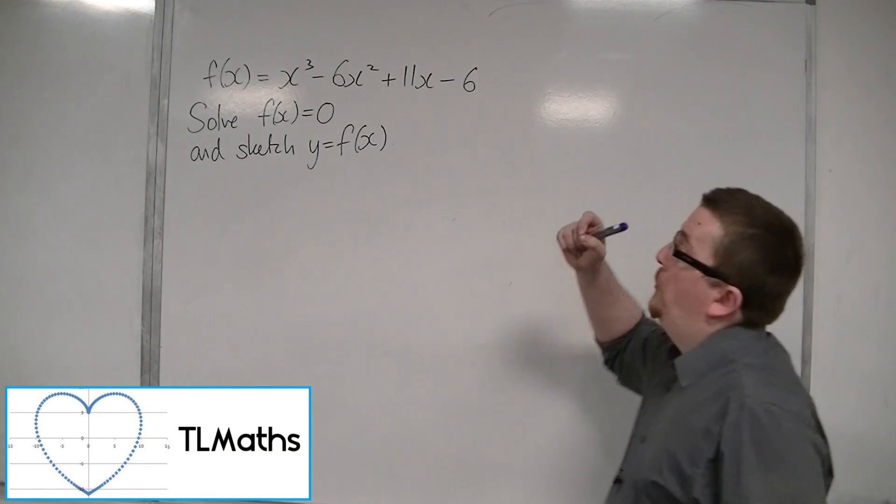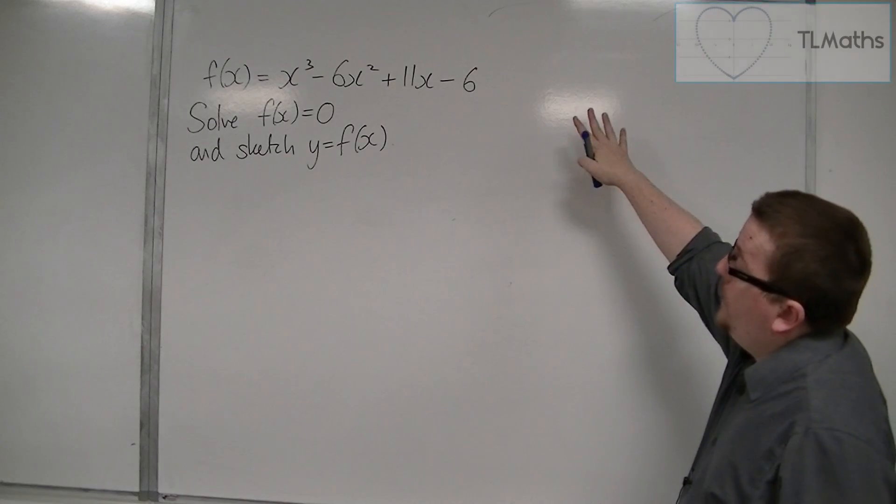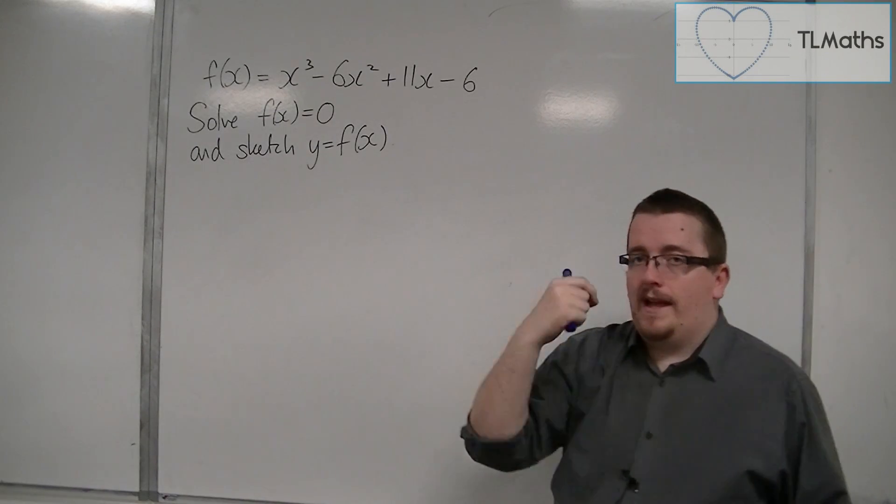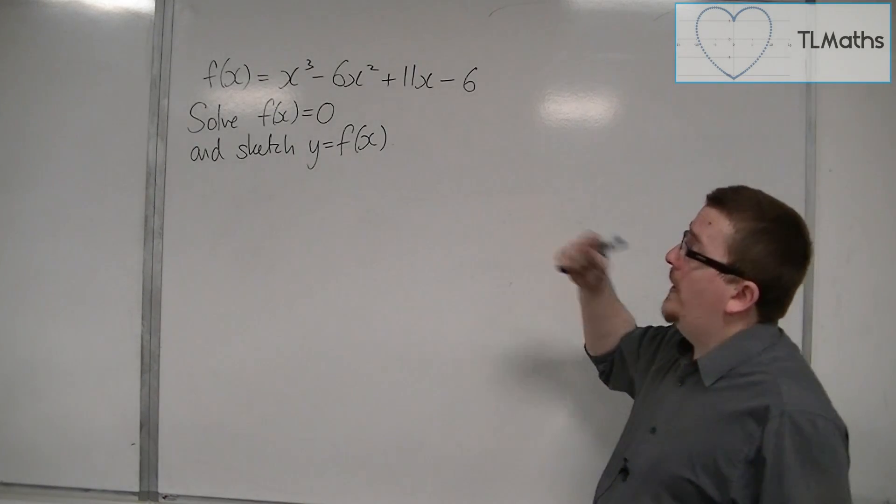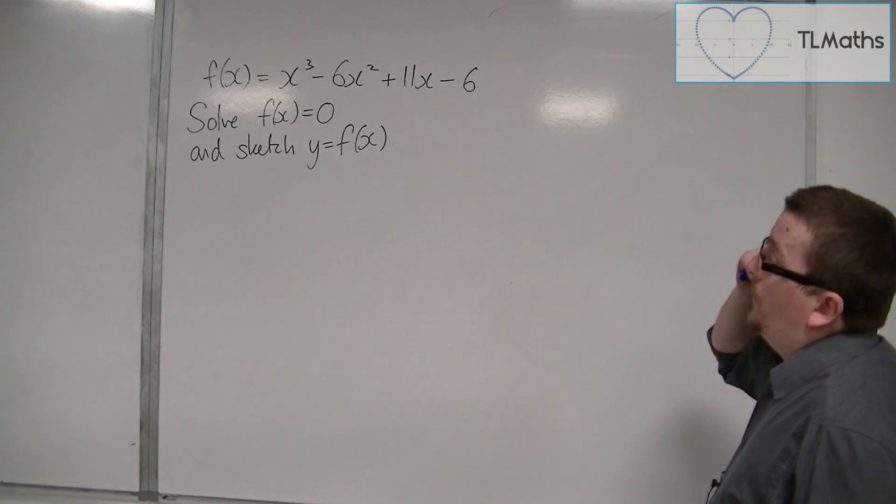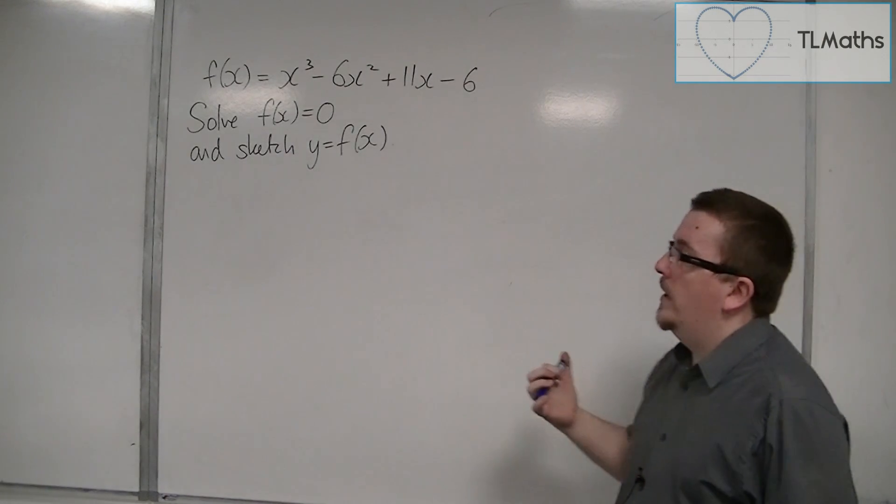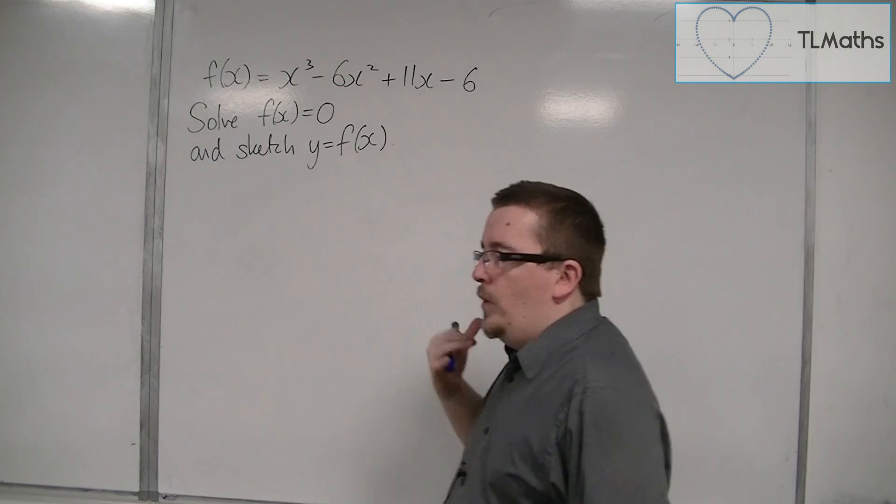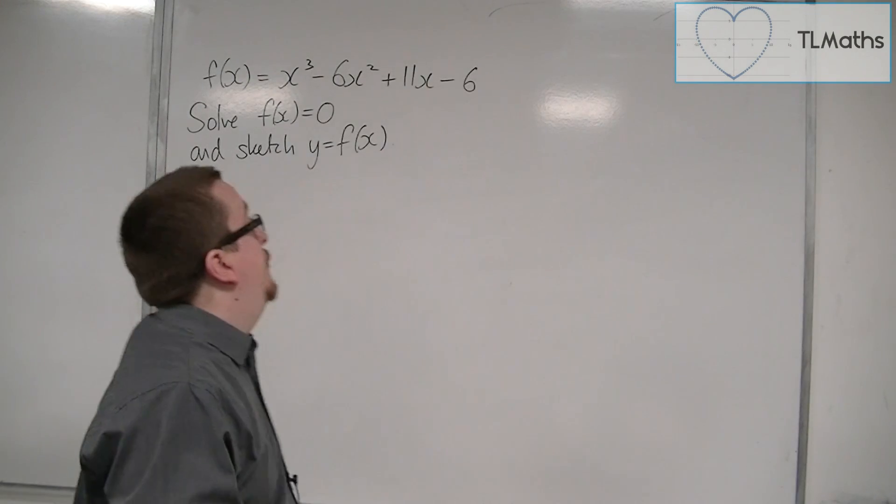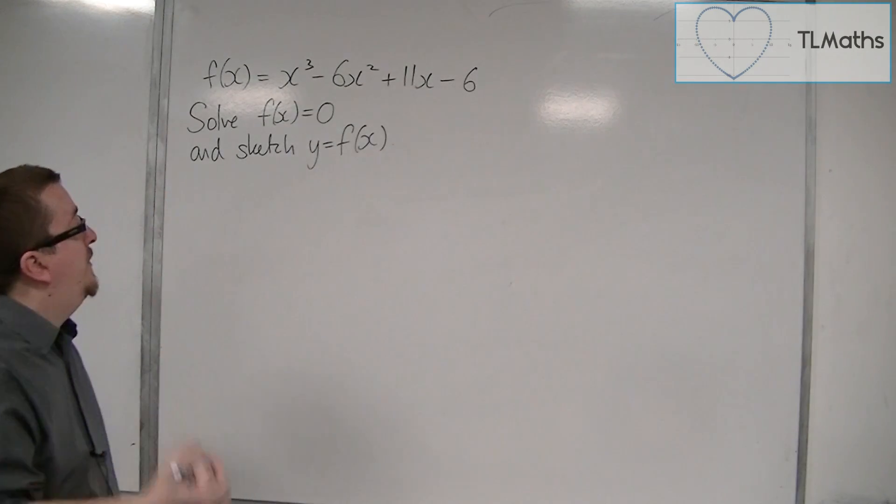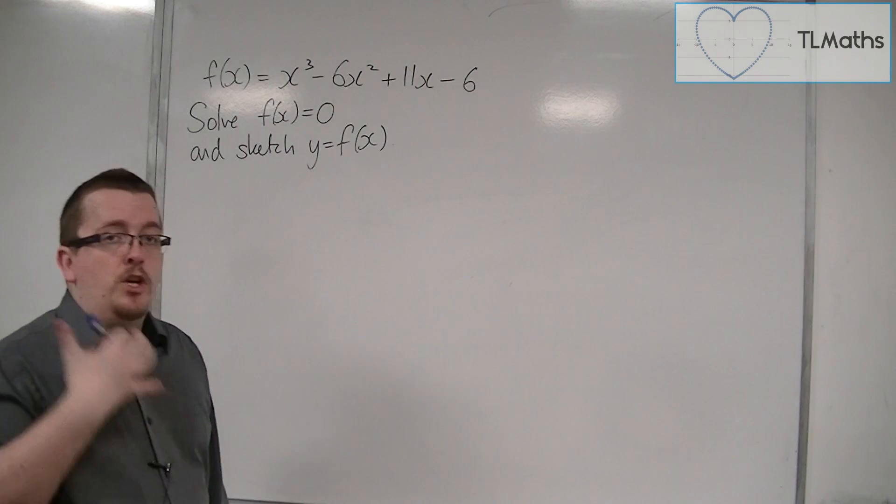Now let's return to the cubic equation that we had a couple of videos ago. f of x is equal to x cubed minus 6x squared plus 11x minus 6. And what I want to do is solve f of x equals 0 and then sketch the cubic.